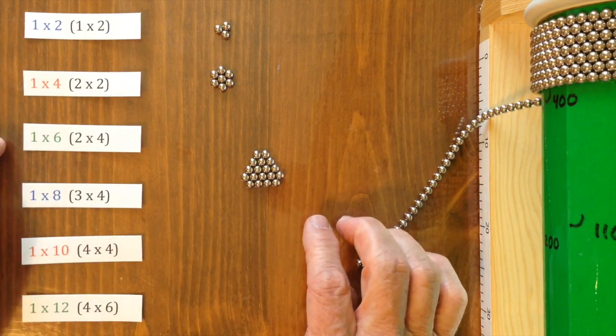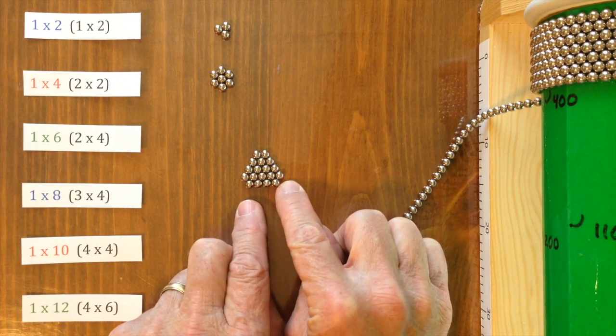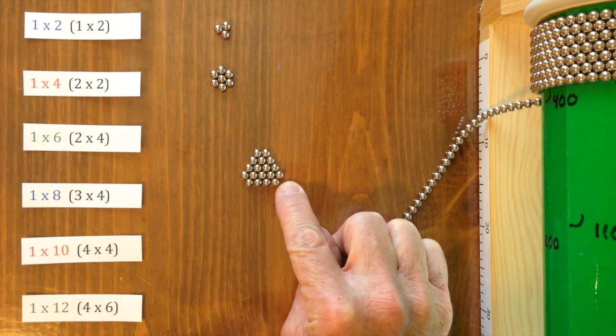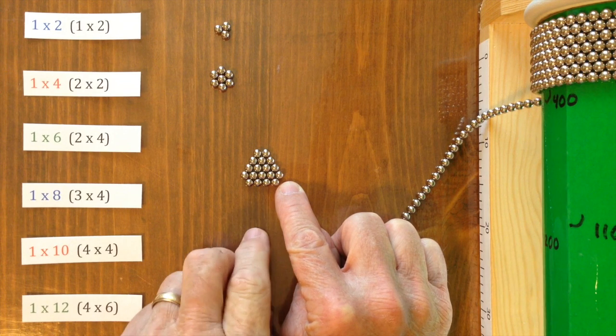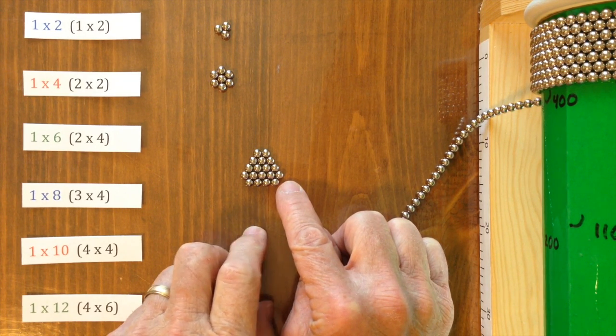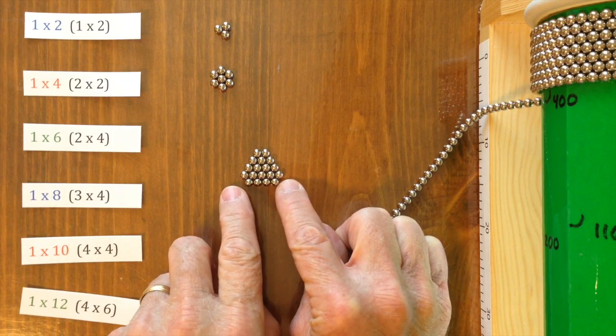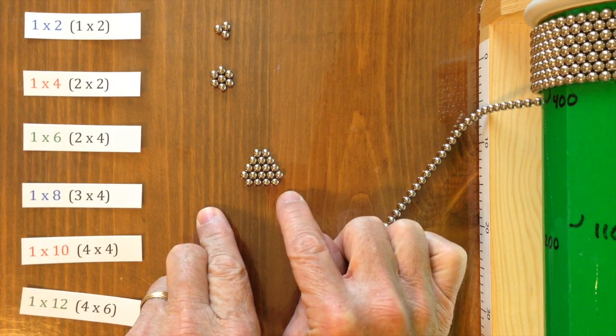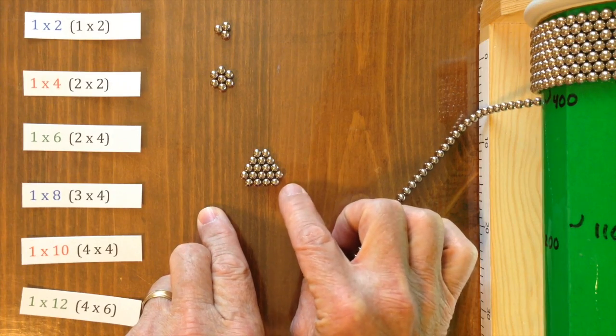And then to make the 1 by 6, we're just going to add one magnet to each of the corners. But again, it's not stable until it becomes part of the cube. But you can see that if you add a magnet here and here, you'll have 6 along this side and only 1 on the end.